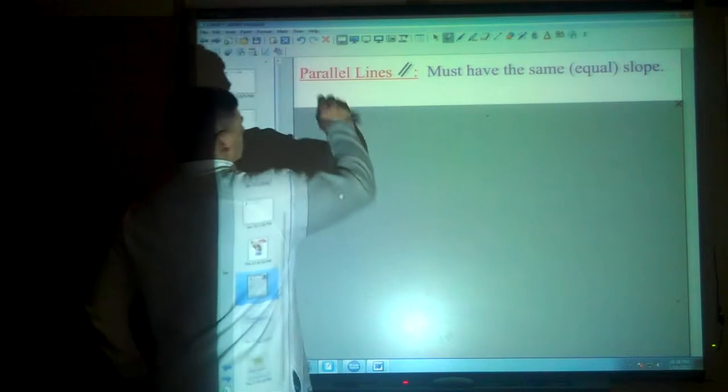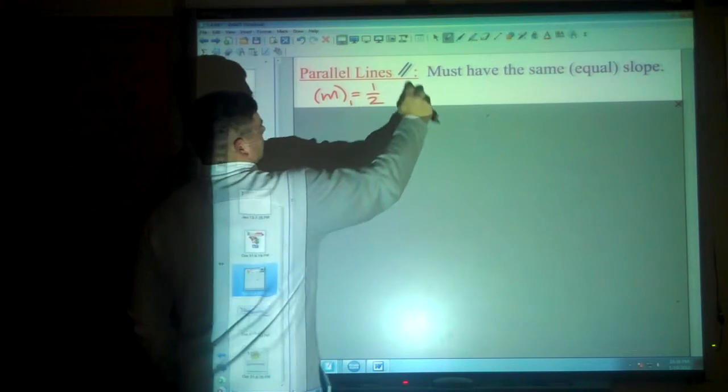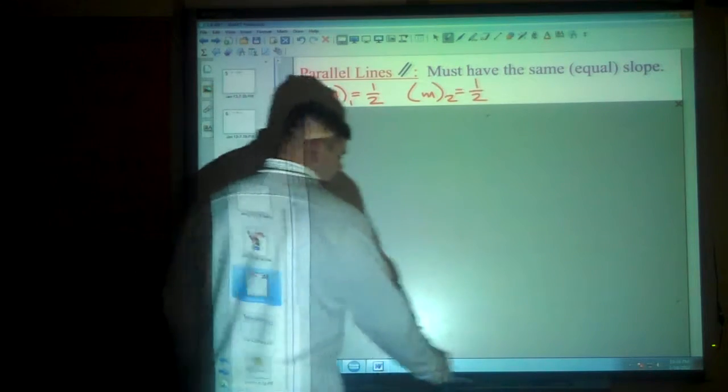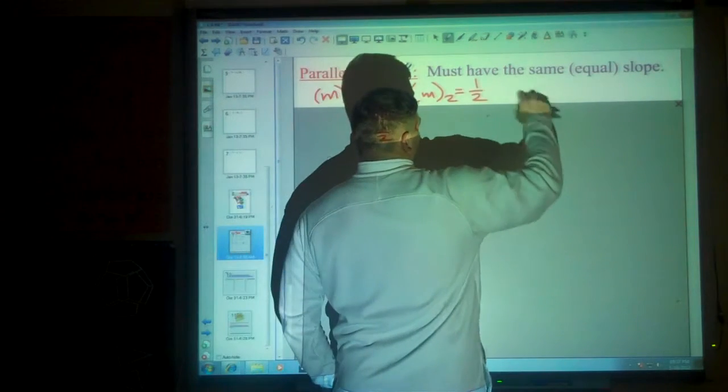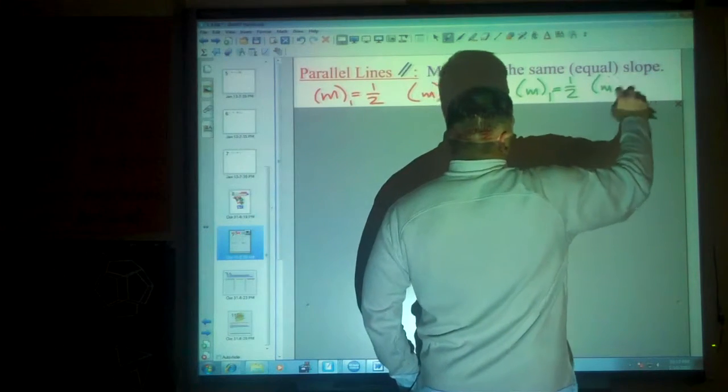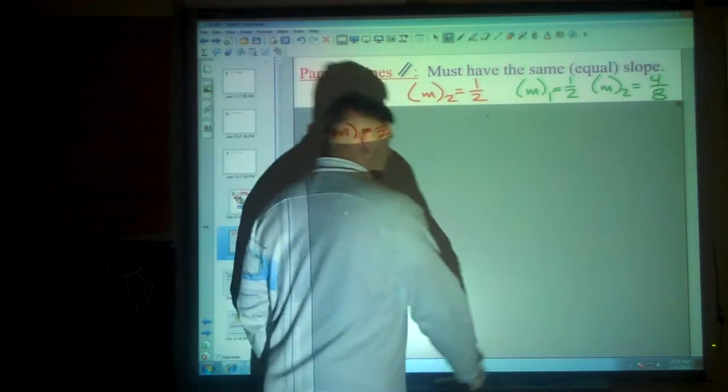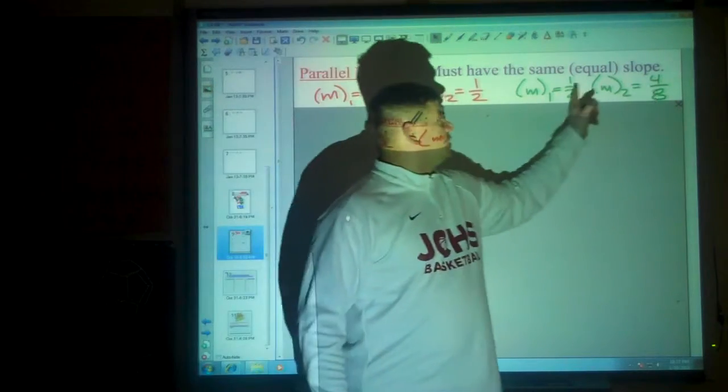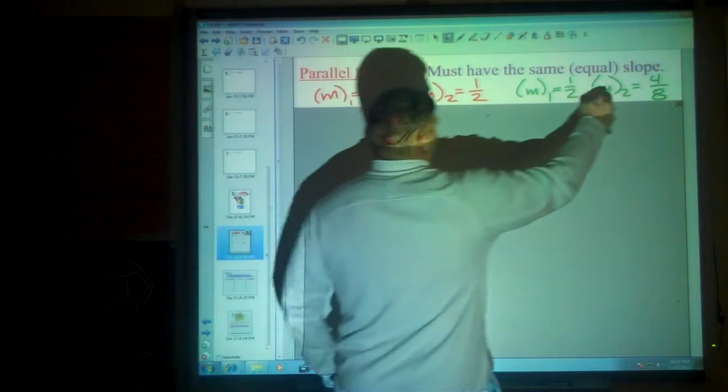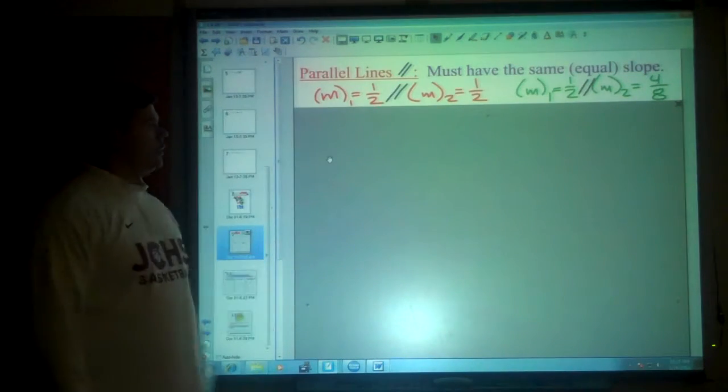And what I mean by that is, maybe one of them has a slope, so the slope of 1 is 1 half. The slope of the other is also going to be 1 half. But you could have the slope of 1 equal 1 half, and you could have the slope of another equal 4 eighths. Because 4 eighths is the same as 1 half. And so we would say these two slopes are parallel because they have the same or equal slope.